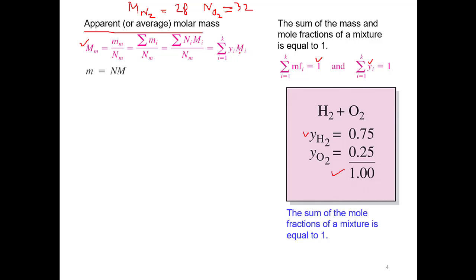In the previous example with oxygen and hydrogen, the molar mass of the mixture equals y_oxygen × M_oxygen plus y_hydrogen × M_hydrogen. This formula applies the relation that mass equals n times molar mass.